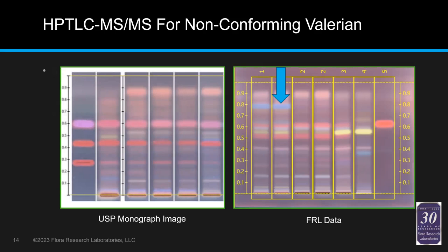You can see a strong blue fluorescing band that shows up in the post-derivatized long-wave image. It's not in the reference lanes — sample two lanes don't show that band. When we look at the USP monograph, it also doesn't show that band. Here, a variety of compendial-compliant materials look very much like our second sample in lanes three and four. So what is this particular band? It's very strong and inconsistent.